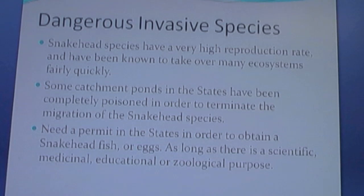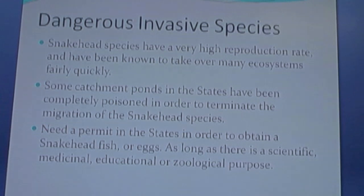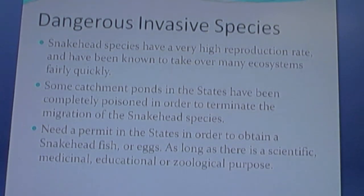Dangerous invasive species: The snakehead species has a very high reproduction rate and has been known to take over many ecosystems fairly quickly. Some catchment ponds in the United States have been completely poisoned in order to terminate the migration of the snakehead species. In the United States, you require a permit to obtain a snakehead fish or eggs, but only if there is a scientific, medicinal, educational, or zoological purpose. They are not allowed to be kept as pets or served as food.